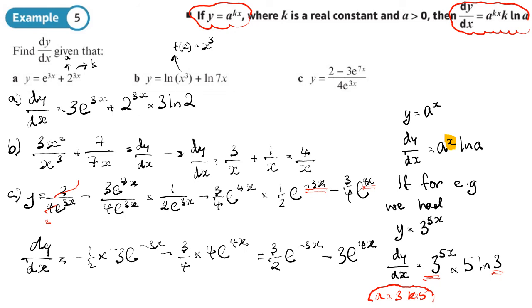There's a sign error that crept in — I blame the pen. The final answer should have a minus sign correctly placed. So the final answer is 3/2·e to the minus 3x, minus 3·e to the 4x. You should now be able to do exercise 9b on pages 236 to 237 of the textbook.